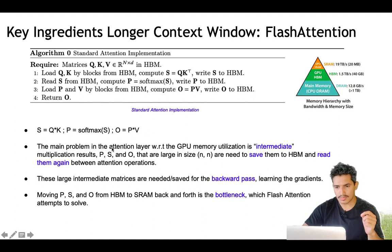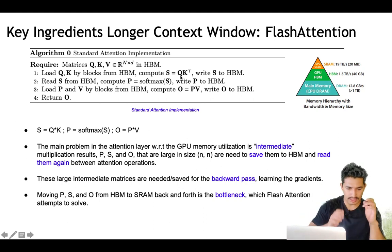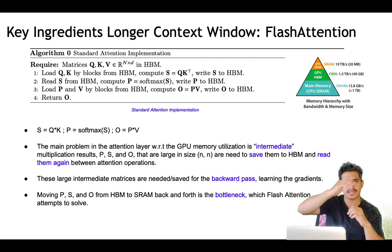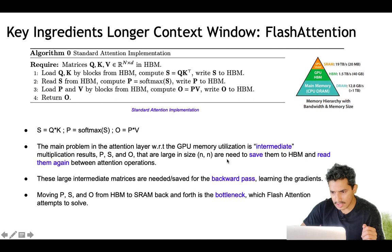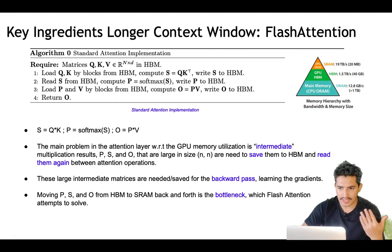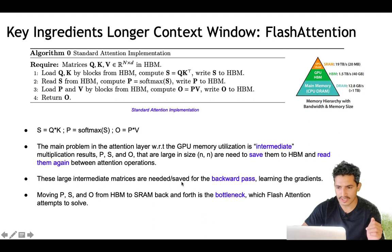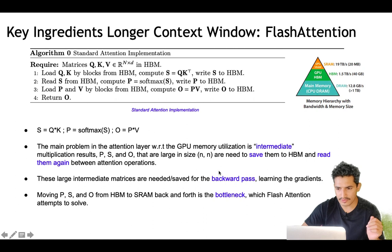The main problem in the attention layer with respect to GPU memory utilization is that intermediate multiplication results S, P, and O are large — of size N×N — because it stores how much importance each word gives to all other words for all N words. These large intermediate matrices are saved every time in high bandwidth memory, and the intermediate result is also saved for the backward pass. This large back-and-forth reading and writing is the main bottleneck of the attention mechanism, which flash attention attempts to solve.